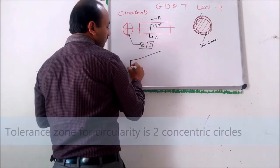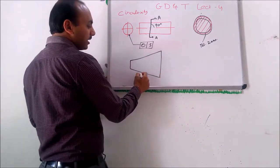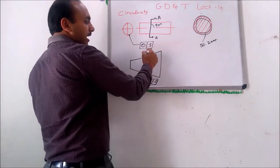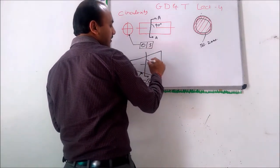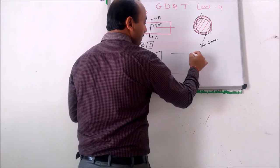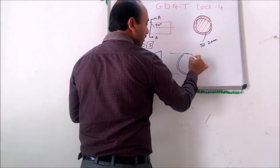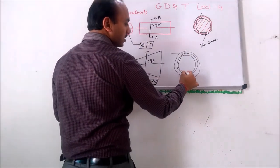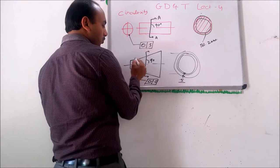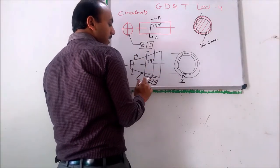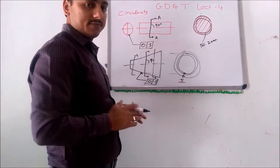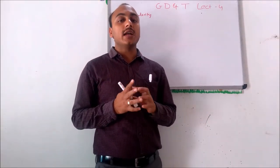Similarly, circularity can be applied on a conical surface. If we apply circularity on a cone, it means that if we cut it in a section perpendicular to the axis, all the points on this surface must lie within the specified tolerance zone. The tolerance zone is 0.5 mm, and we can cut at different sections and measure the deviation — it should not cross the limit of 0.5 mm.